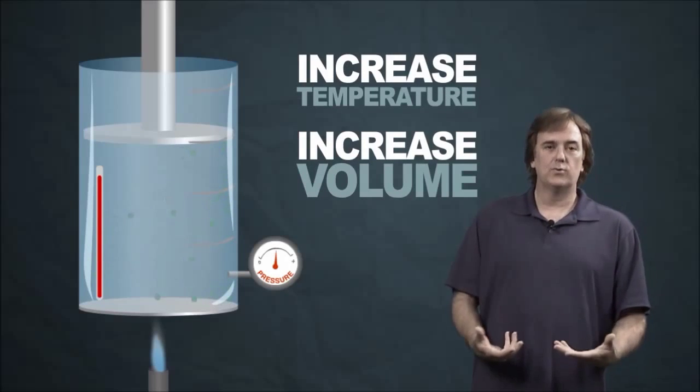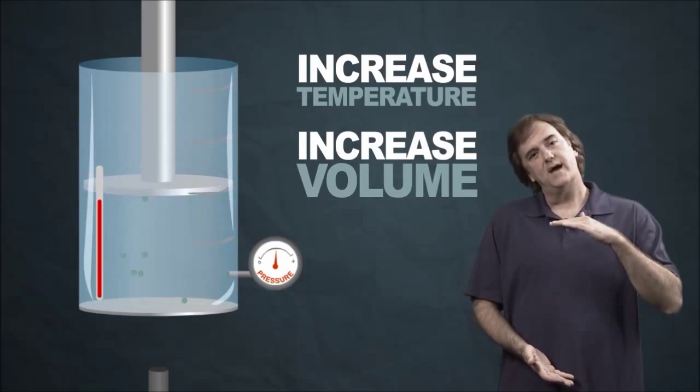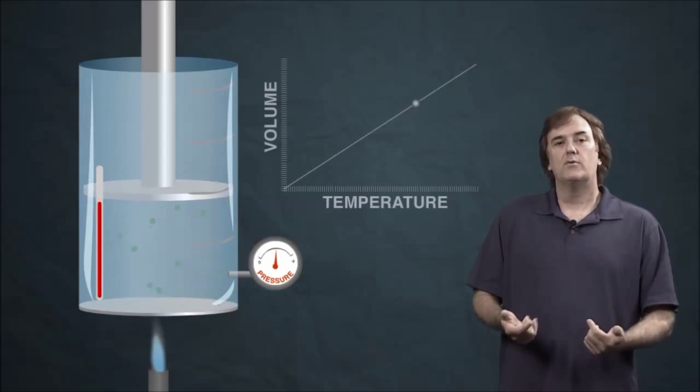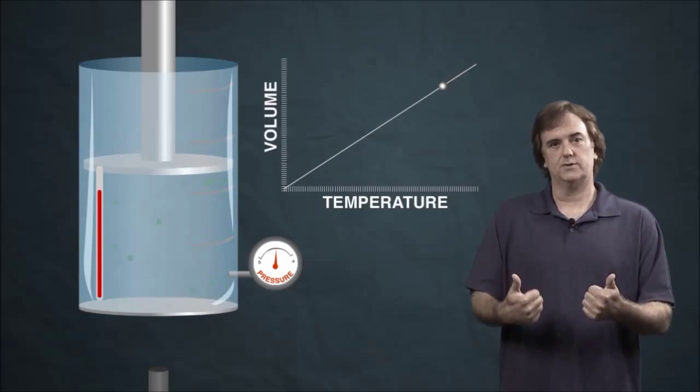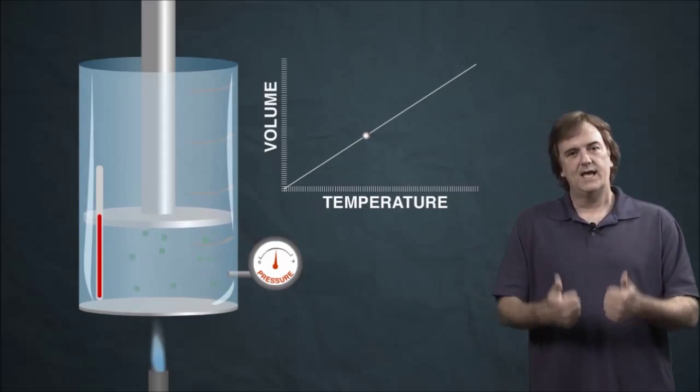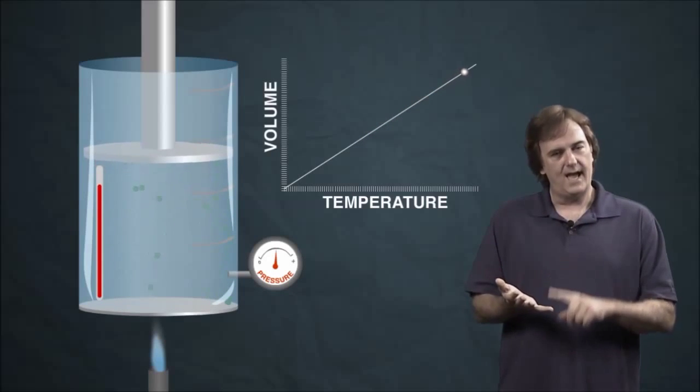And then if you allow it to cool, take away the heat and allow the gas to cool, the gas will now fall back to a smaller volume as you go to a smaller temperature. So temperature and volume are directly proportional - you increase one you increase the other. And if you want them to be directly proportional exactly you got to use absolute temperature.